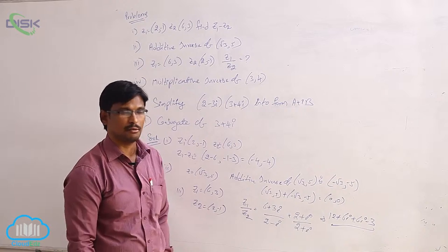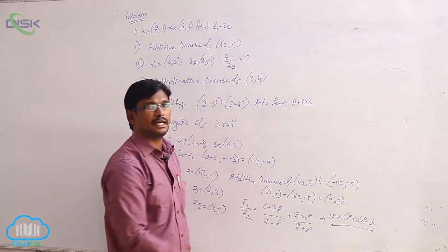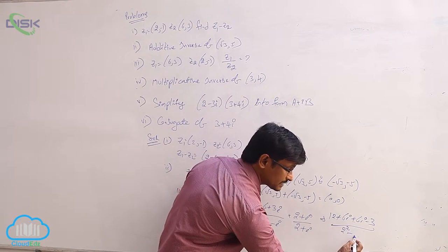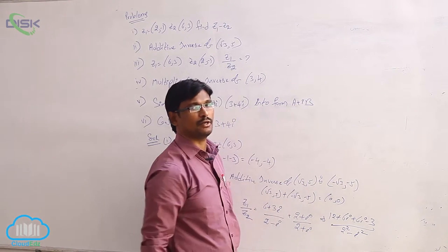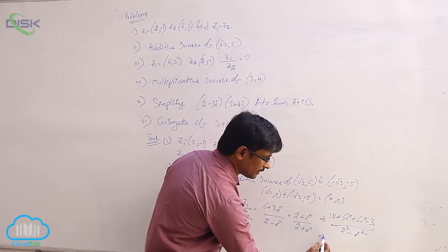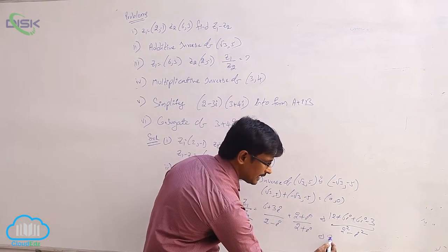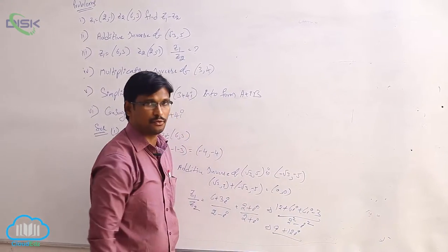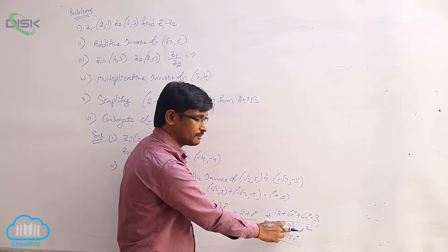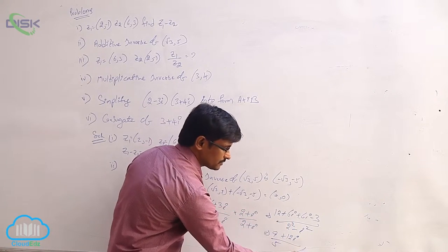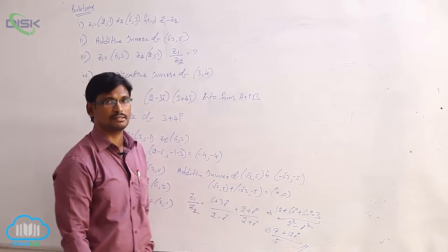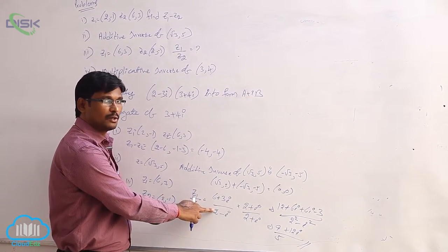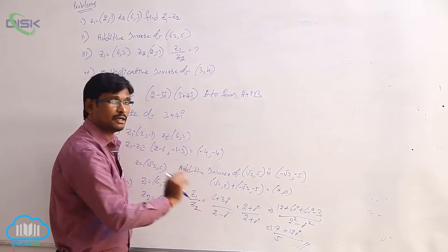The denominator is in the form (a + b)(a − b) = a² − b², so it becomes 2² − i² = 4 − (−1) = 5. The numerator simplifies to (12 − 3) + (6i + 6i) = 9 + 12i. So z1/z2 = (9 + 12i)/5. Remember: for z1/z2, multiply and divide by the conjugate of the denominator.